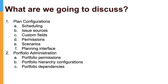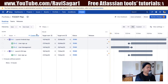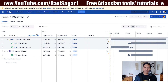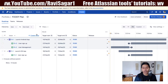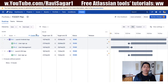You also have the option to define the issue links or link types in your portfolio dependencies. By default, you have the option to use the block type of issue link, but you can use your own if you want. Let us now talk about how you can change the portfolio plan configurations.